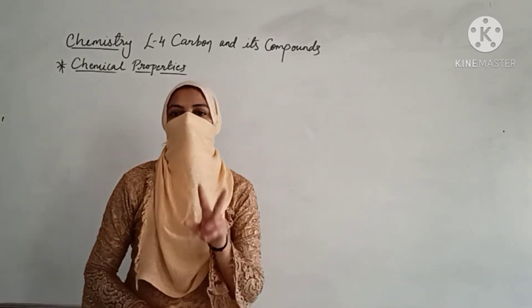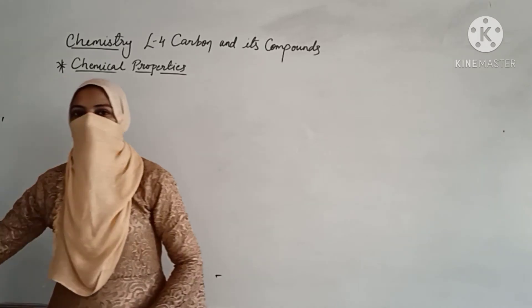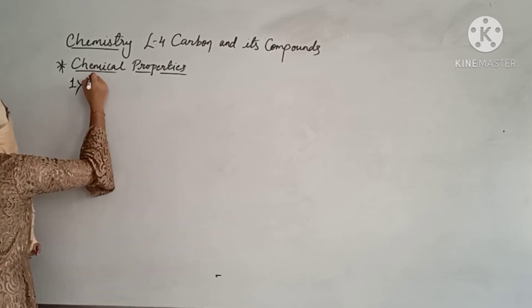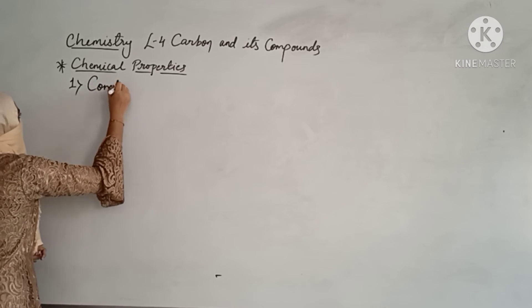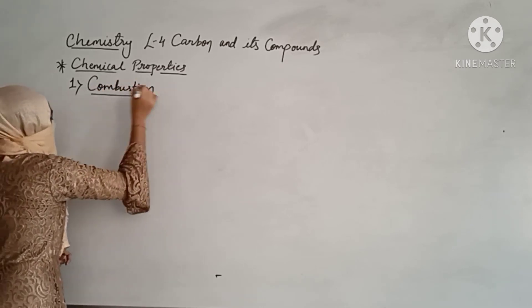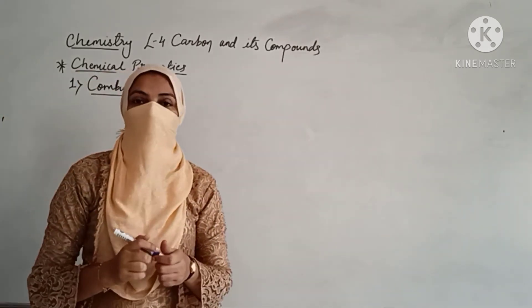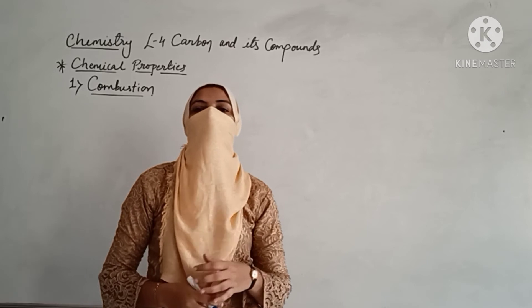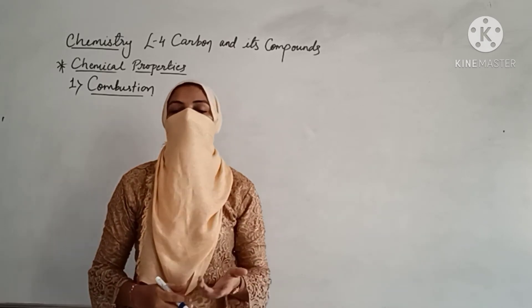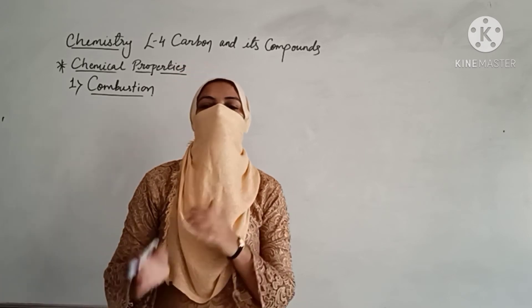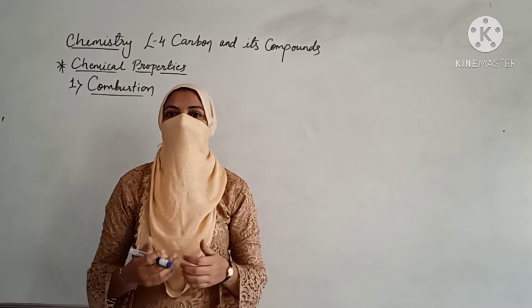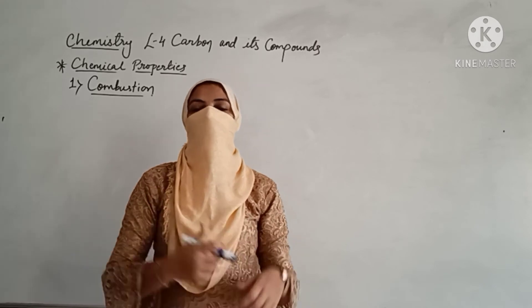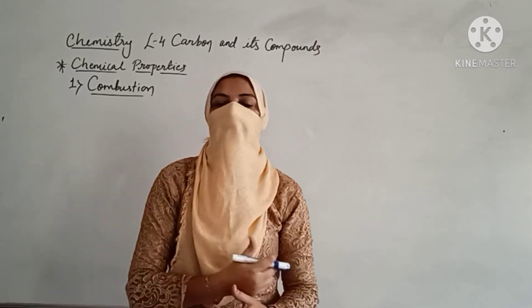In chemical properties, we have already done two properties. The first property was combustion, which we covered in complete detail. Combustion is about fuels — we talked about how all fuels contain carbon and hydrogen. We discussed saturated and unsaturated fuels, and whether they give a blue flame (complete combustion) or yellow flame (incomplete combustion). That we have completed in detail.